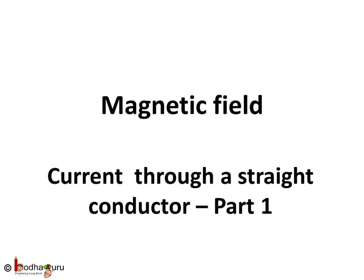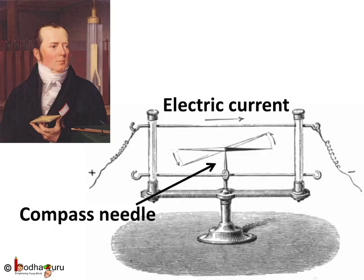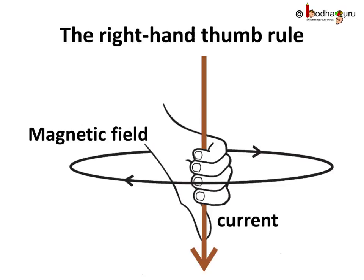Hello everyone, in our last lesson we learnt that electric current creates a magnetic field. We also learnt the simplest way of finding the direction of this magnetic field associated with a current carrying conductor, and that is right hand thumb rule.